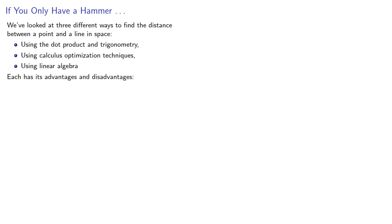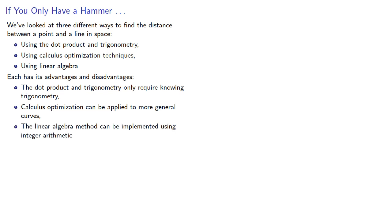Each has its advantages and disadvantages. The dot product and trigonometry only require knowing trigonometry. Calculus optimization can be applied to more general curves, and the linear algebra method can be implemented using integer arithmetic. The best method is whichever method solves the problem most easily.